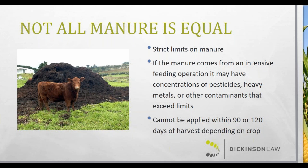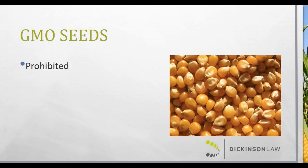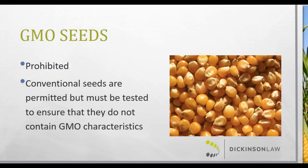There are also limitations on how close to harvest you can apply fertilizer unless you engage in composting. GMO seeds are prohibited. One challenge during the transition period is putting together an organic system plan that identifies all the ways the operation will comply with organic regulations, including identifying a source for seeds with the appropriate characteristics and no banned substances — such as coatings applied to the outer seed designed to reduce fungus. Conventional seeds can be used as long as they're not GMO.